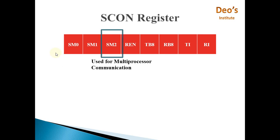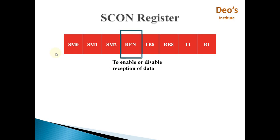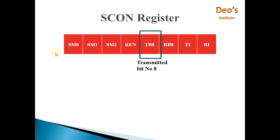The next bit is SM2, which is used for multiprocessor communication. The next bit is REN. The REN bit is used to enable or disable the reception of data.